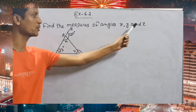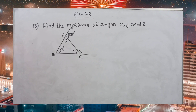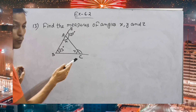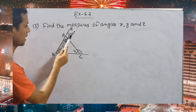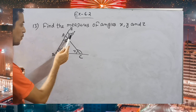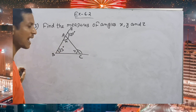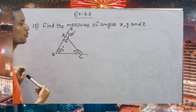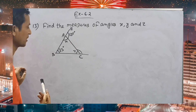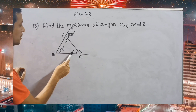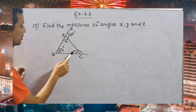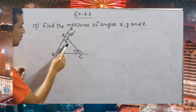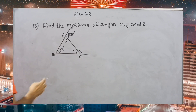Find the measures of angles X, Y, Z. Here you can see ABC is a triangle, and we can see two exterior angles here and here. The exterior angle of a triangle is equal to the sum of the two opposite interior angles. This exterior angle is opposite to Z.